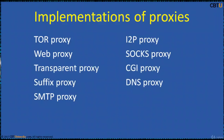By keeping the source of information hidden, I2P offers censorship resistance. The goals of I2P are to protect users' personal freedom, privacy, and ability to conduct confidential business. A web proxy forwards HTTP requests. A SOCKS proxy forwards arbitrary data after the connection phase; it is similar to HTTP CONNECT in web proxies. A transparent proxy, also known as an intercepting proxy, inline proxy, or forced proxy, intercepts normal communication at the network layer without requiring any special client configuration.